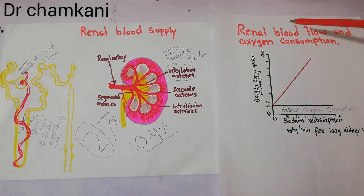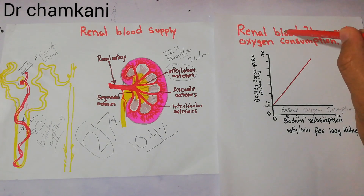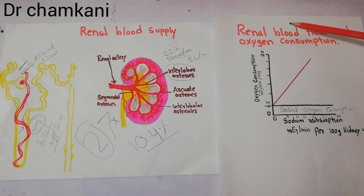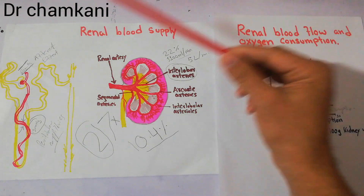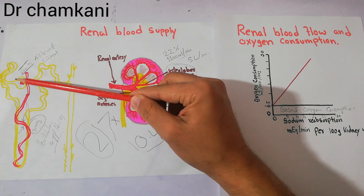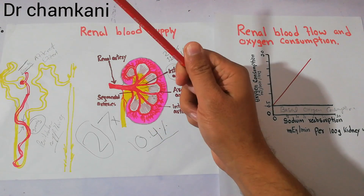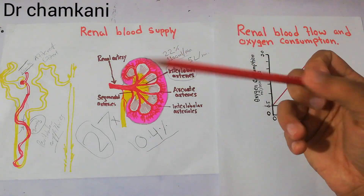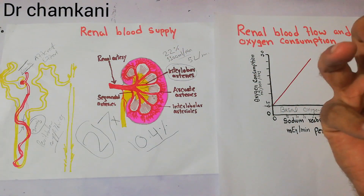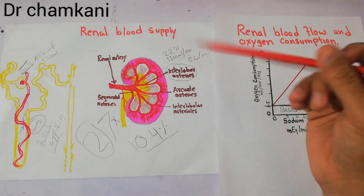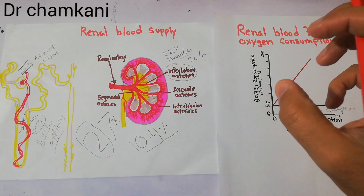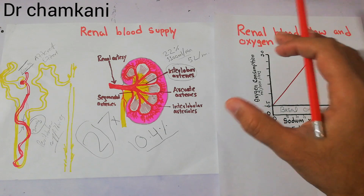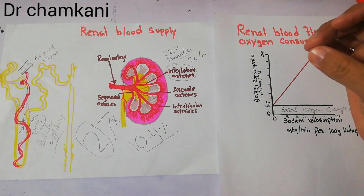That covers renal blood flow and oxygen consumption. In coming lectures, we will discuss the different determinants of renal blood flow and the factors that can increase or decrease it, and how changes in renal blood flow affect the filtration rate, glomerular filtration rate, and ultimately the urine formation process. The ultimate purpose of studying the whole renal system is to understand urine formation, but to do so we need to dive deep into the molecular level and discuss each aspect in detail.